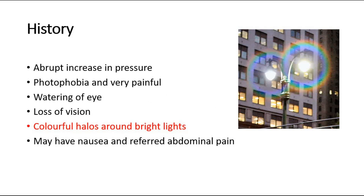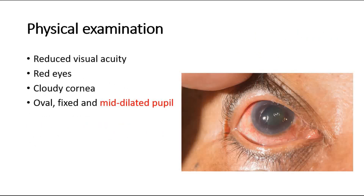In the history of close angle glaucoma, there is an abrupt increase in pressure. The patient may complain of photophobia, severe pain, watering of the eye, and loss of vision. A characteristic feature is seeing colorful halos around bright lights. The patient may also have nausea and abdominal pain. On physical examination, there is reduced visual acuity, red eyes, cloudy cornea, and an oval, fixed, mid-dilated pupil.